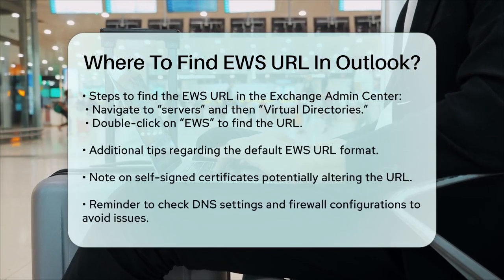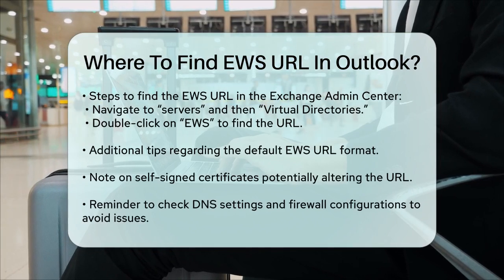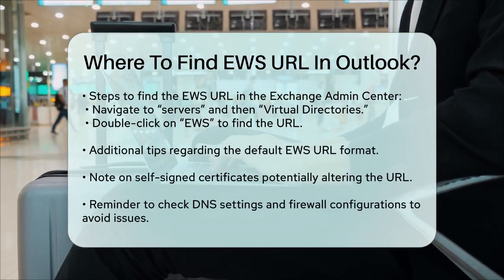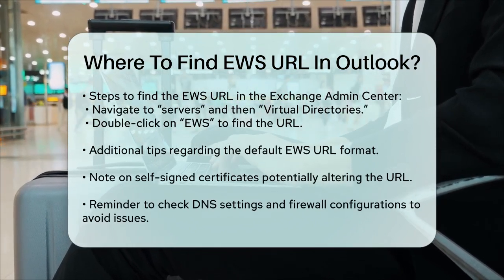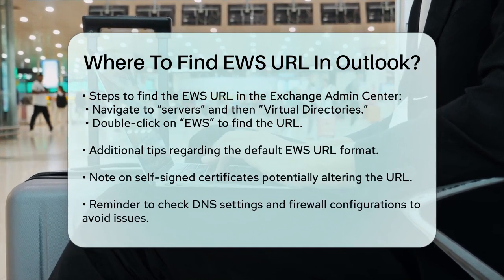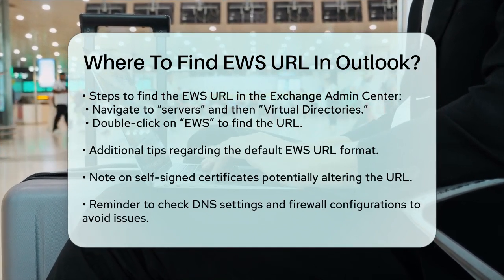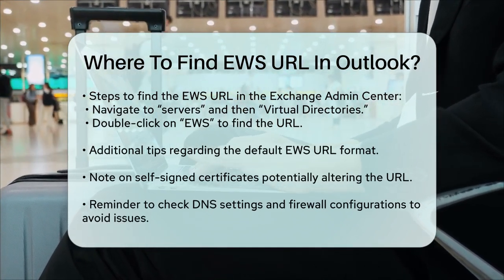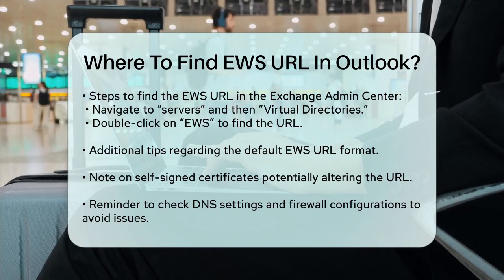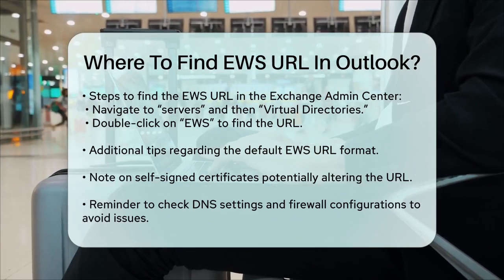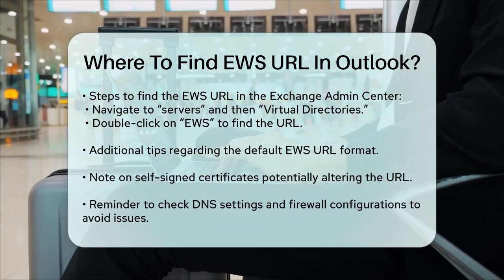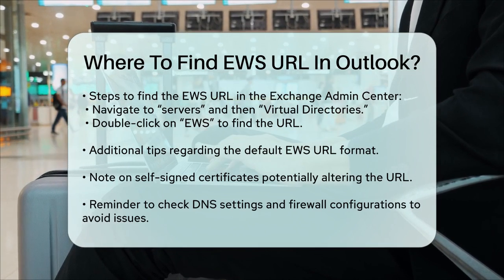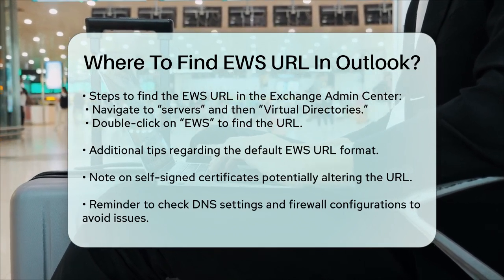Additional Tips: the default EWS URL format is usually https://mail.domain.com/ews/exchange.asmx, but this may not always work. If you're using a self-signed certificate, the URL might be different from what is displayed by these methods. Always ensure that your DNS settings and firewall configurations are correct to avoid any connection issues.